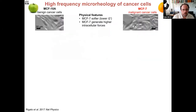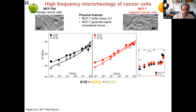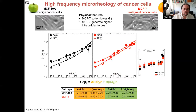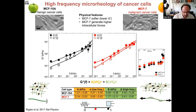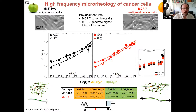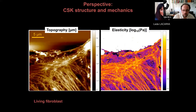Comparing benign and malignant cancer cells, we found that benign cells have a more relaxed cytoskeleton with an exponent around 0.9, while malignant cells show an exponent of about 0.4 — close to the prediction of 0.5 for a tense cytoskeleton. Those were the main conclusions.